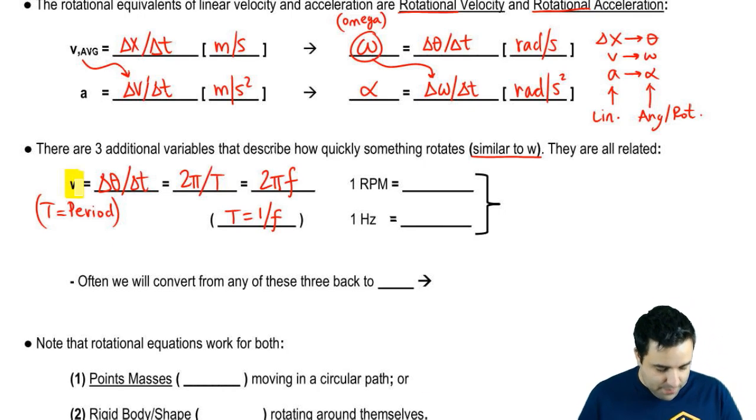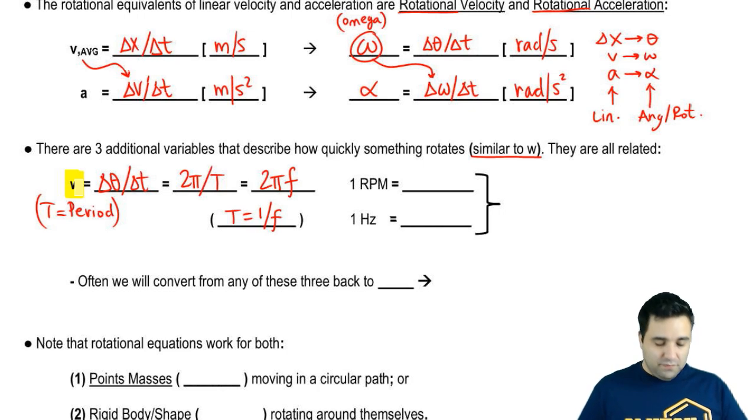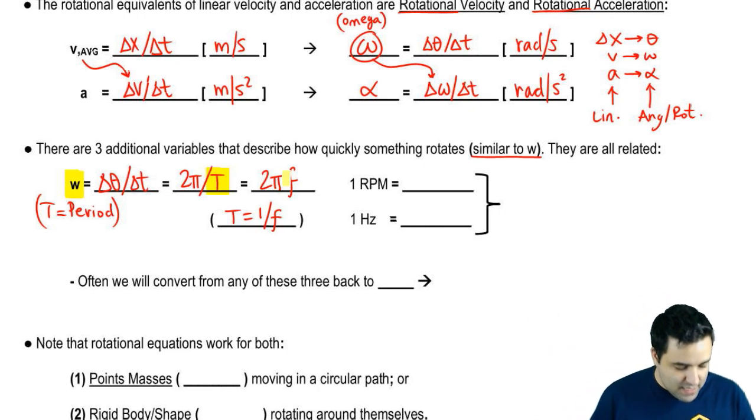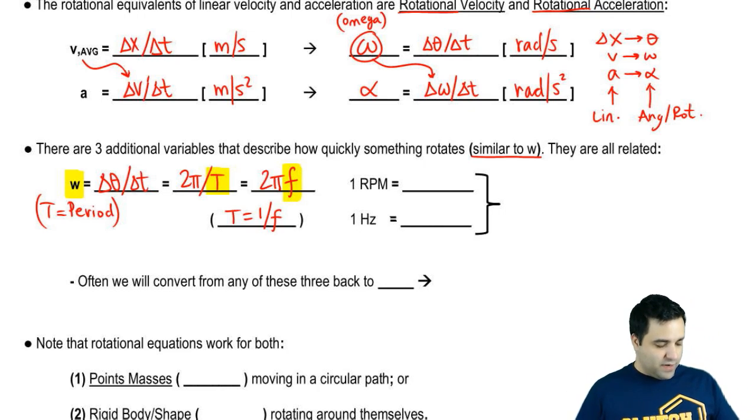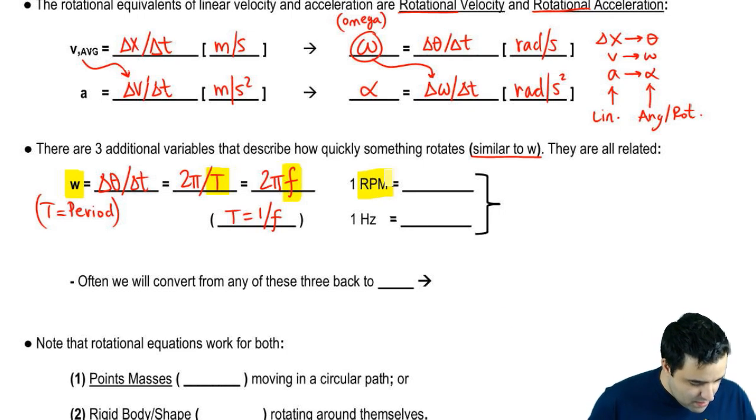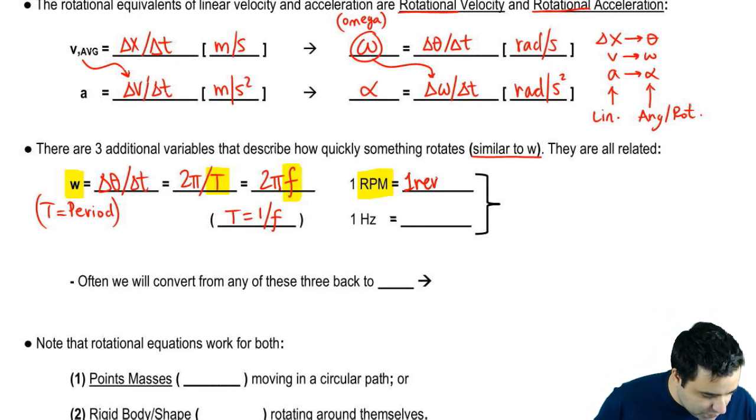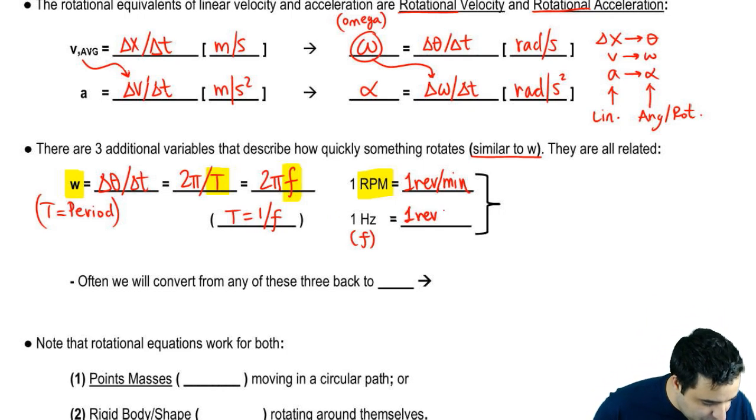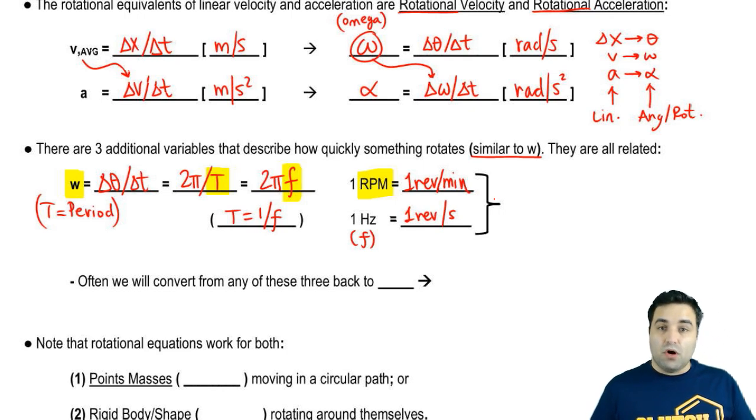So you have omega is a measurement of how quickly something spins. Period is a measurement of how quickly something spins, and frequency is also a measure of how quickly you spin, and they're all related by this equation. Last one we're going to talk about is RPM. RPM stands for revolutions per minute. A hertz, which is a unit of frequency, is one revolution per second. So you can see how these two are related.